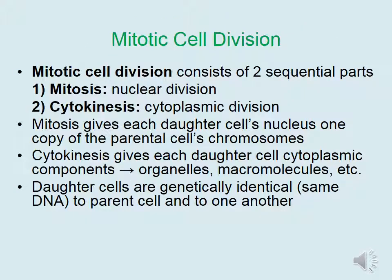Mitotic cell division consists of two sequential parts. First is mitosis, which is nuclear division referring to the segregation of the chromosomes. This is followed by cytokinesis, which is cytoplasmic division, dividing one cell into two. Mitosis gives each daughter cell's nucleus one copy of the parental cell's chromosomes, while cytokinesis gives each daughter cell cytoplasmic components, including organelles like mitochondria and macromolecules besides DNA, like proteins, lipids, and carbohydrates.